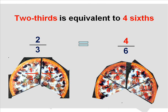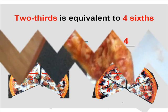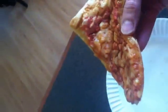So kids, 2 thirds is equivalent to 4 sixths. The answer is 4 sixths is equal to 2 thirds. Yummy, mmm good.